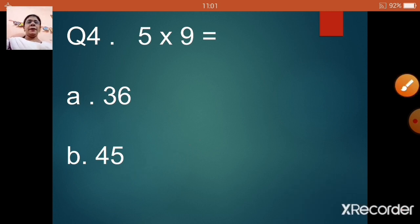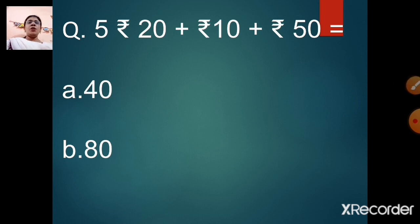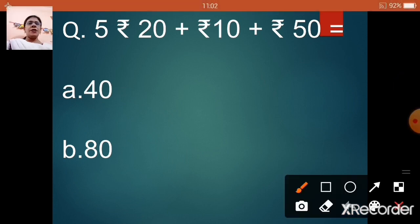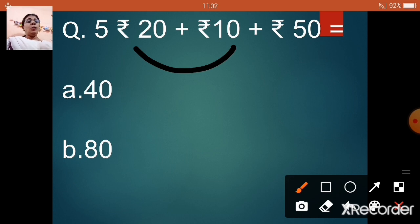Question number 5: rupees 20 plus rupees 10 plus rupees 50 is equal to — option A: 40, option B: 80. Let us count — 20 plus 10 is 30, and 30 plus 50 is 80. So our answer is option B, 80.